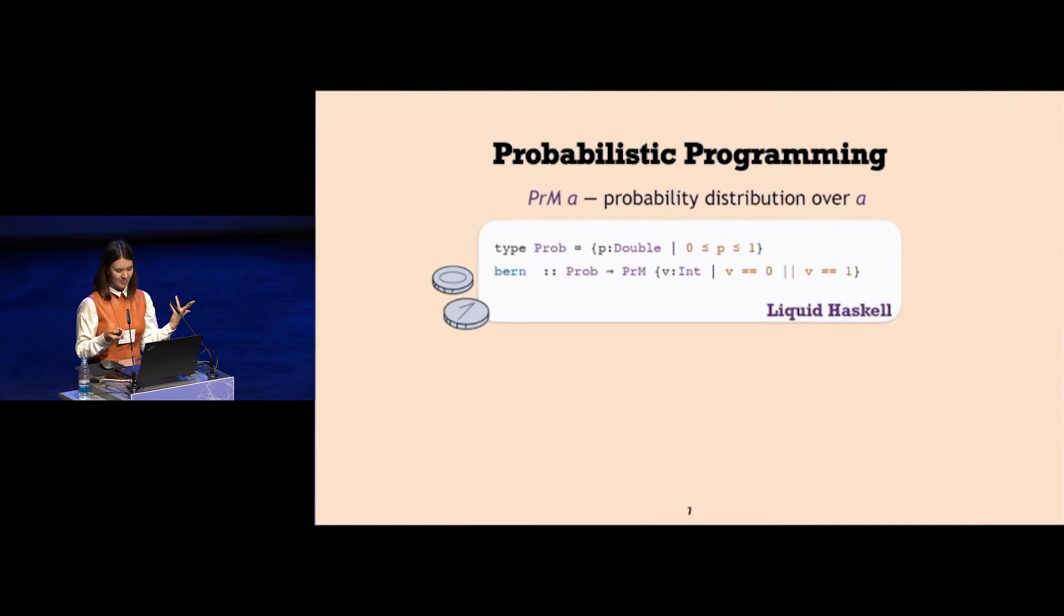It has two components. The first one is the usual Haskell type, the double. We give it a name p, and then the second component of refinement type is a predicate that says that this double always has to be between zero and one. Then the return type of Bernoulli also changes. We had uncertain integer, and now we also know that it's necessarily zero or one.